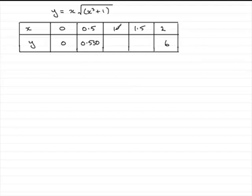If you do that, put 1 in here, 1 cubed is 1 and 1 is 2 and you've got 1 times the square root of 2. Do that on your calculator and you should find you get 1.414.